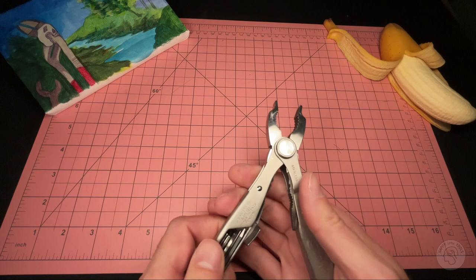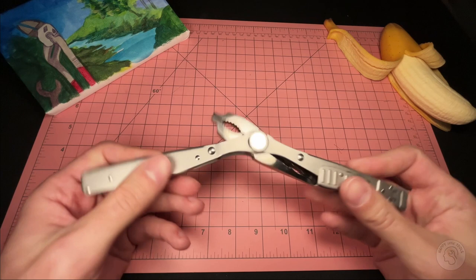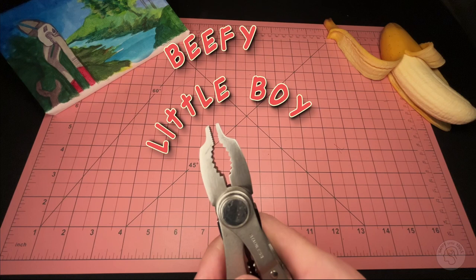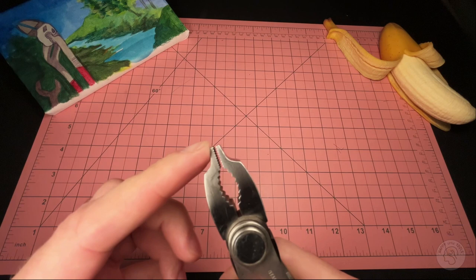When you get it, it has this little lock here for the pliers. And you have two plier options. This is the first beefy little boy here, kind of like a lineman style plier, so it doesn't touch fully. That's so you can get really good purchase on thicker wires.